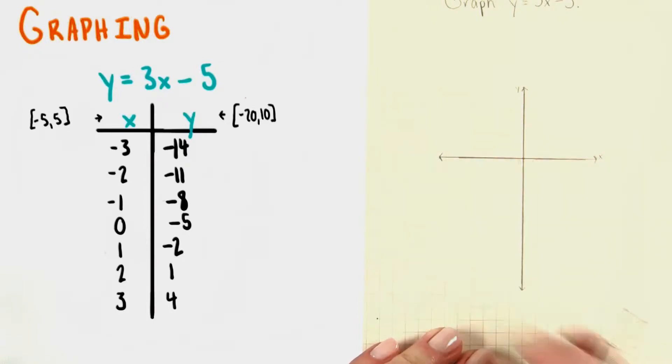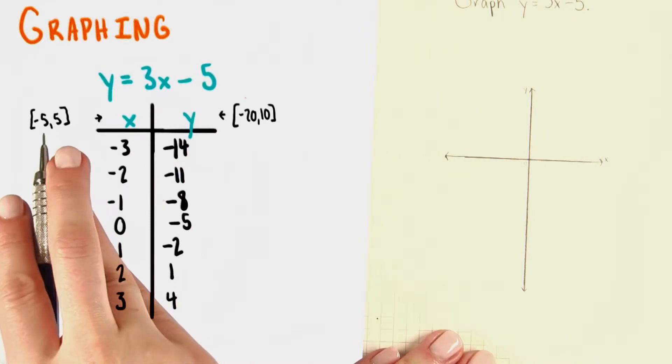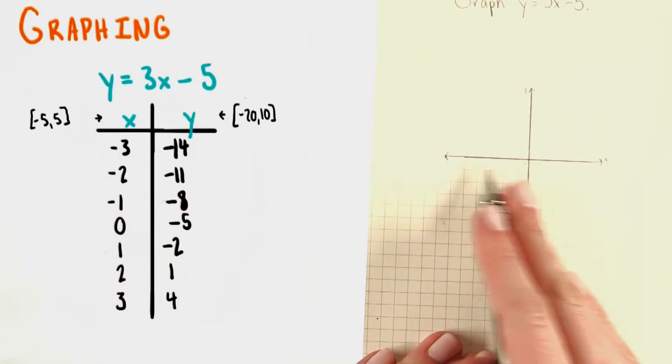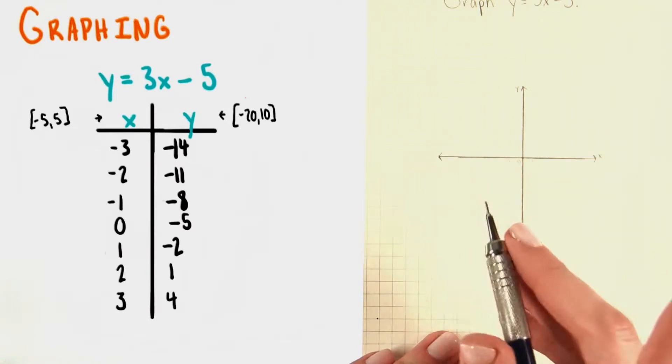I get rid of those little boxes just to make our whole graph area look a little bit cleaner. Since our x values need to range from negative 5 to 5 on this portion of the axis that we've drawn, each of these grid lengths needs to count for 1.